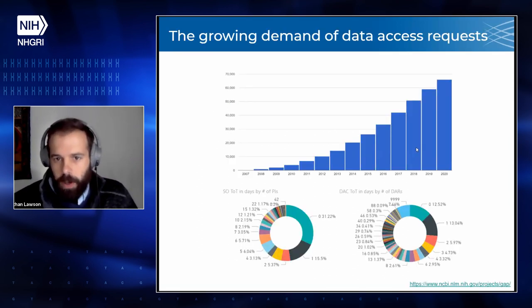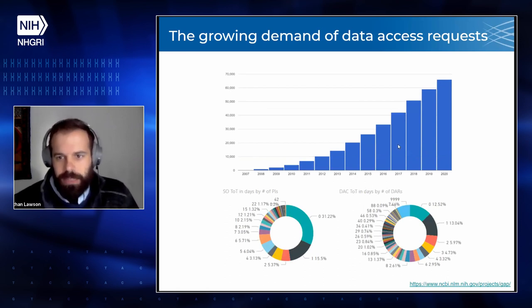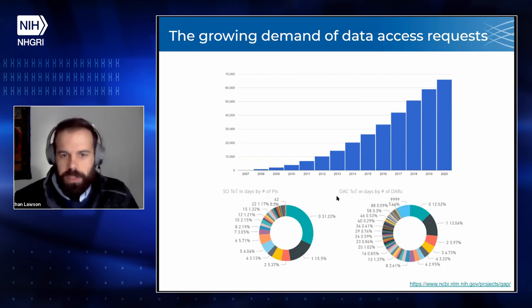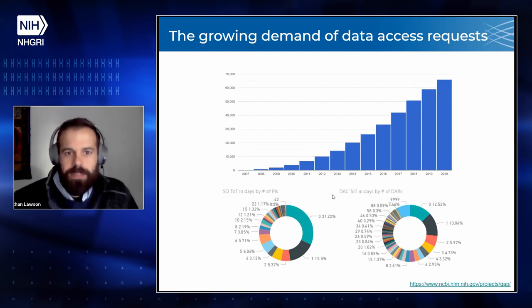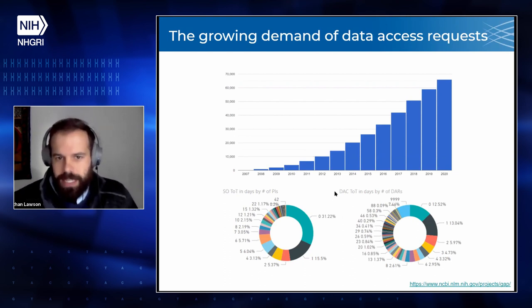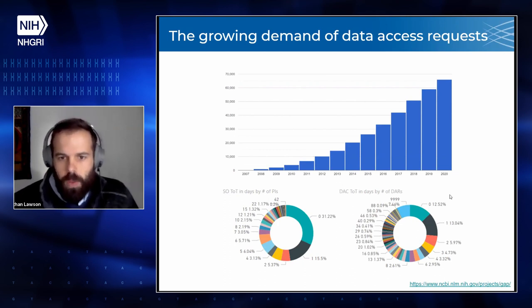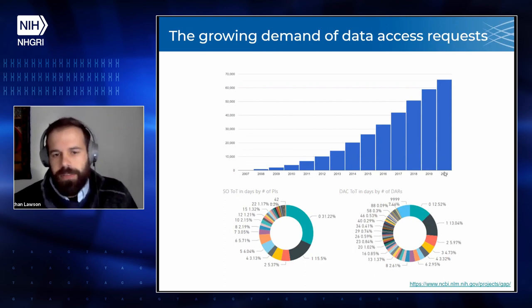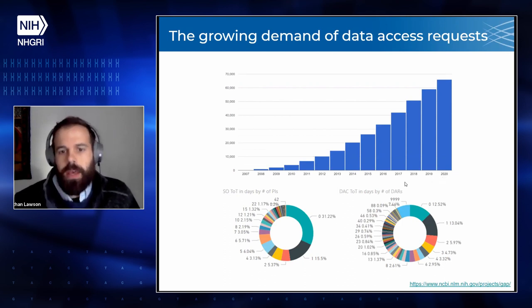As many of you know, the amount of data access requests are likely to increase significantly. The more genomic data becomes available, the more that tools are easily available to analyze it, and the more that individuals are trained to do so, it's very likely that the demand for that data is going to increase significantly and likely exponentially. With that, there's going to be a significant demand on the signing officials and the data access committees required to review data access requests before researchers are granted access.